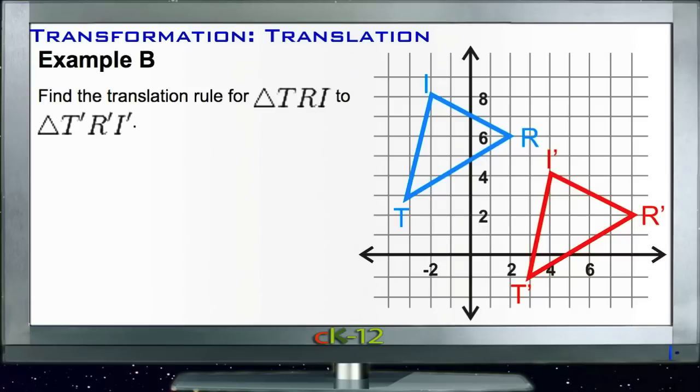Example B asks us to find the translation rule to go from triangle TRI to triangle T'R'I'. We need to look at the two triangles and see what happens if we go from our original triangle here to the prime triangle down here. Let's count the movement of any given point.